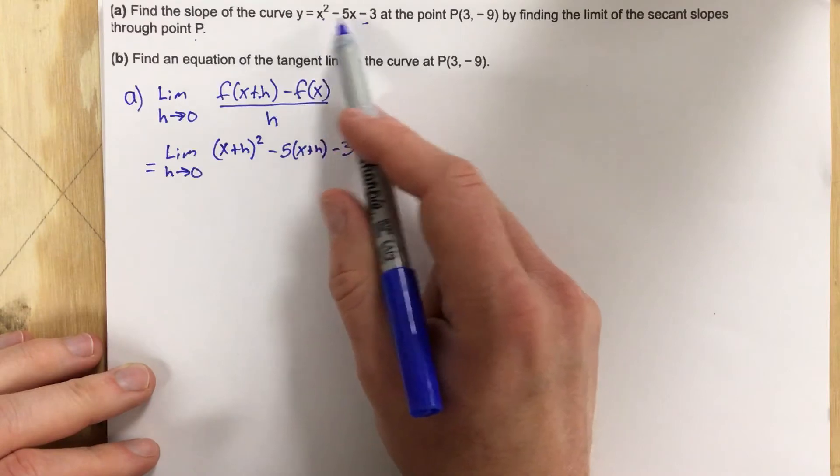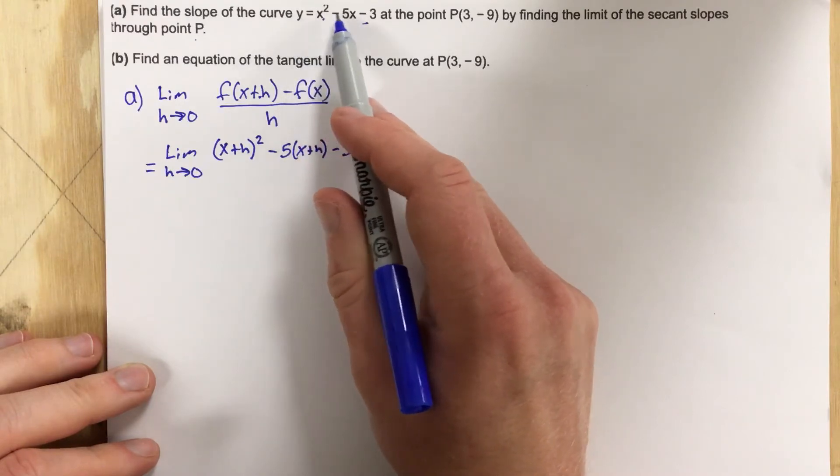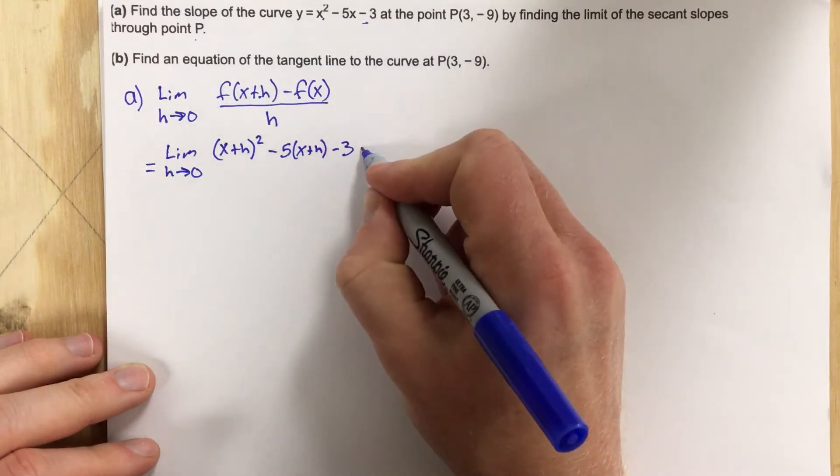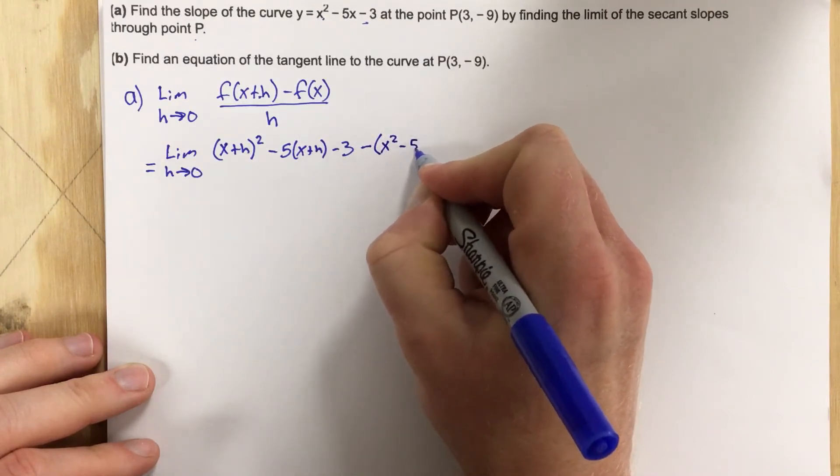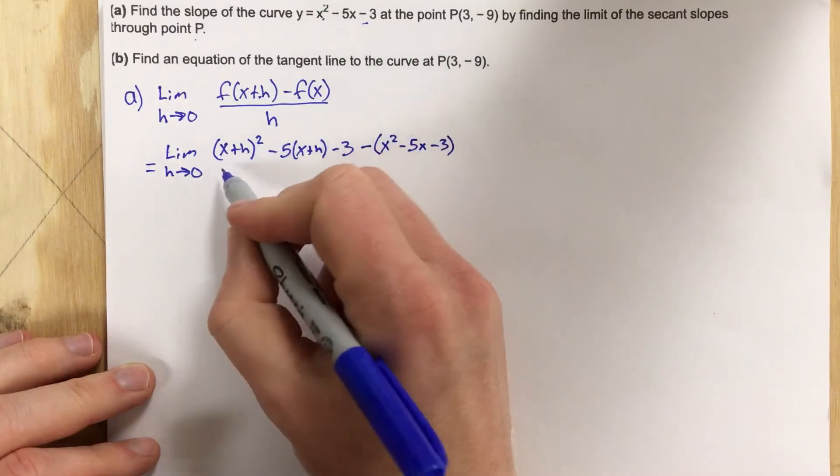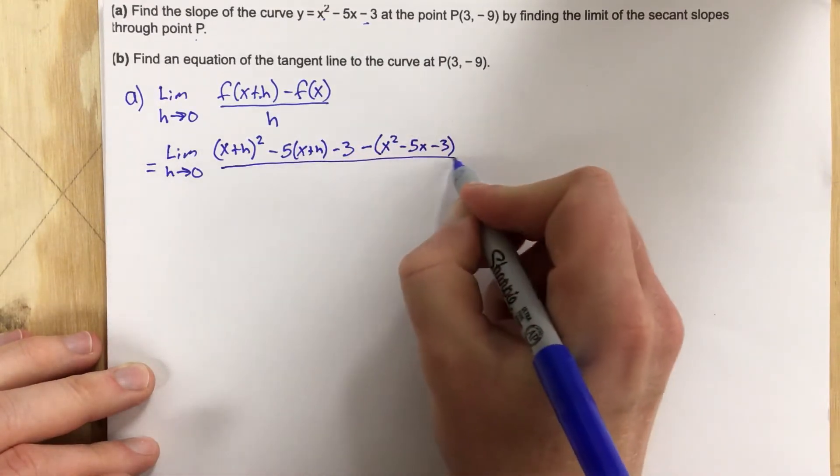Now I have to subtract the f(x), which is just the function. This is just f(x) equals x squared minus 5x minus 3, so we're going to say minus x squared minus 5x minus 3, and that's all over h.